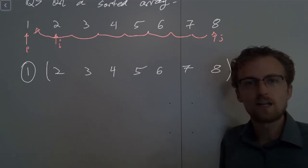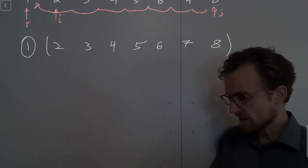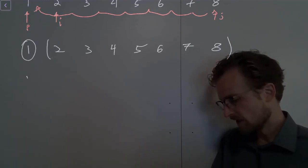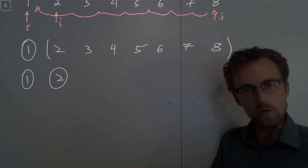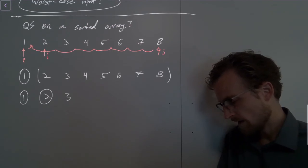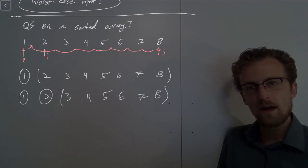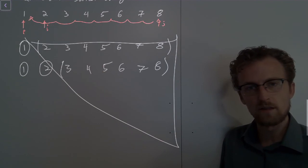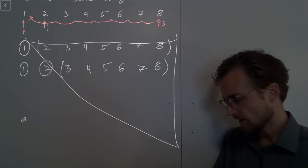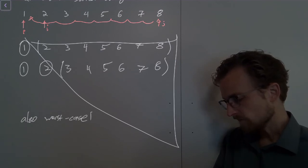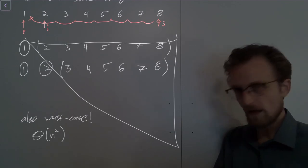Now we go sort the rest. After the first step, 1 is verified to be in the right place. But the remaining array — 2, 3, 4, 5, 6, 7, 8 — is already sorted. We just showed that the first thing quicksort does on an already-sorted array is check that the first element is in the right place using linear effort, and then deal with the rest. After the second step, 1 and 2 are both verified in the right place, and we have 3, 4, 5, 6, 7, 8 remaining. This is exactly what we were hoping to avoid. This is also worst case — big theta of n squared.